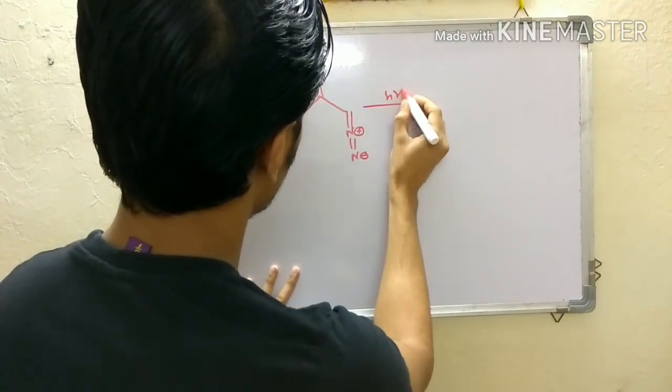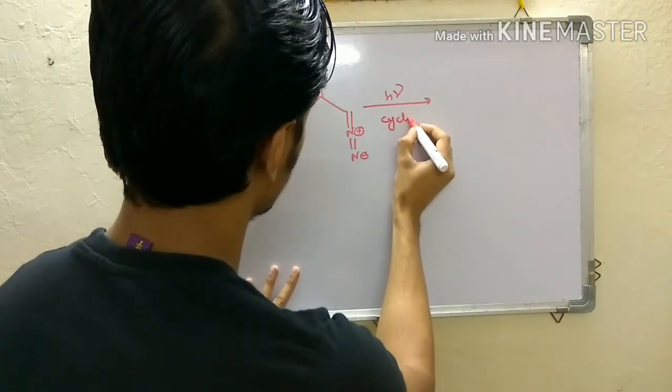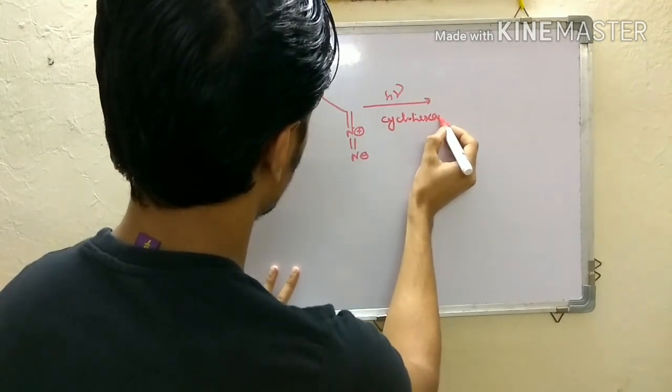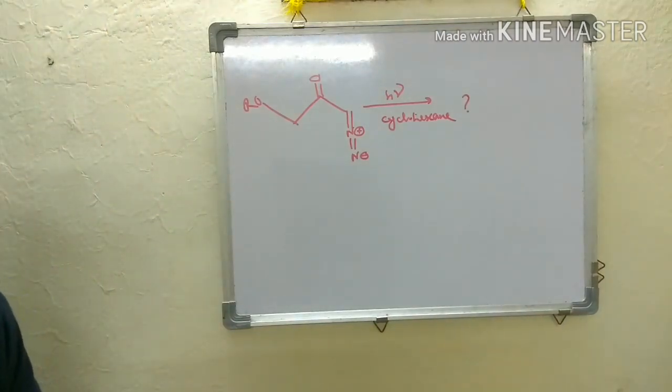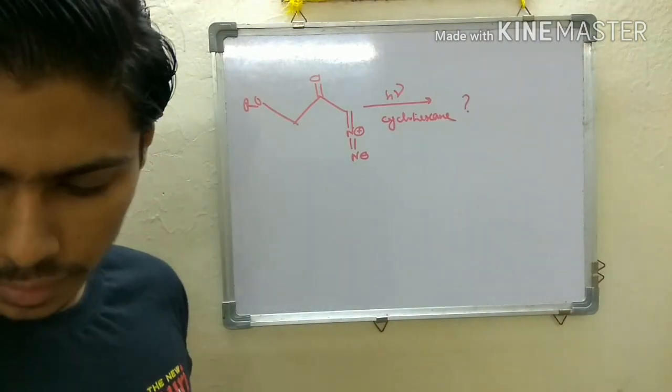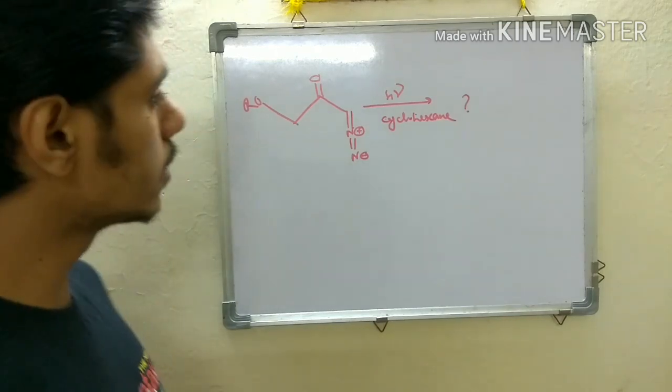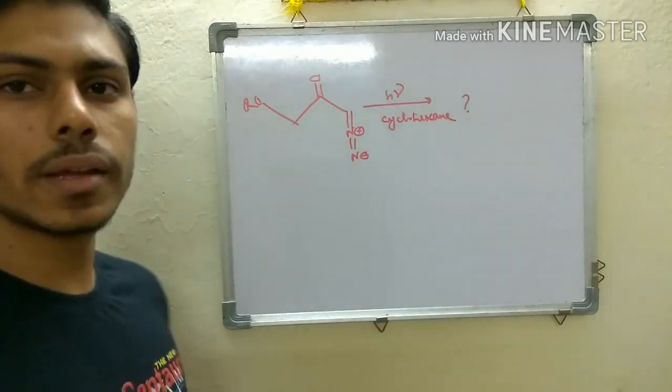This is given H nu and solvent is cyclohexane. So this diazo compound they gave and the solvent is cyclohexane and they applied light. What will be the product?